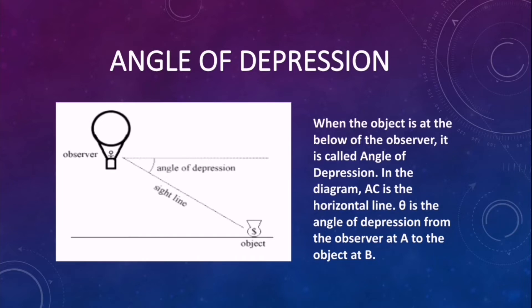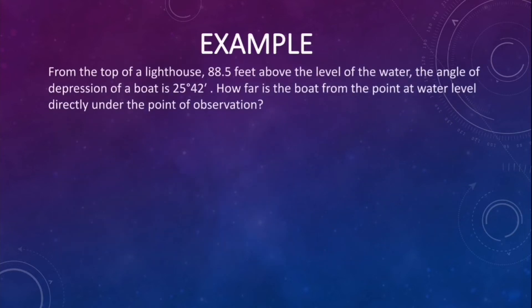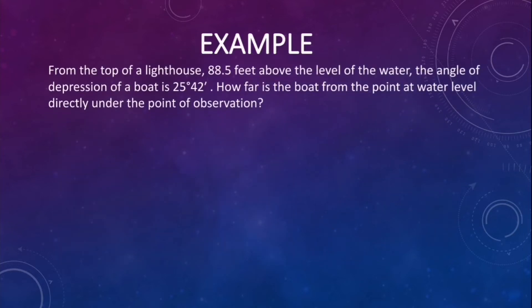Let us have an example. From the top of a lighthouse 88.5 feet above the level of the water, the angle of depression of a boat is 25 degrees and 42 minutes. How far is the boat from the point at water level directly under the point of observation?